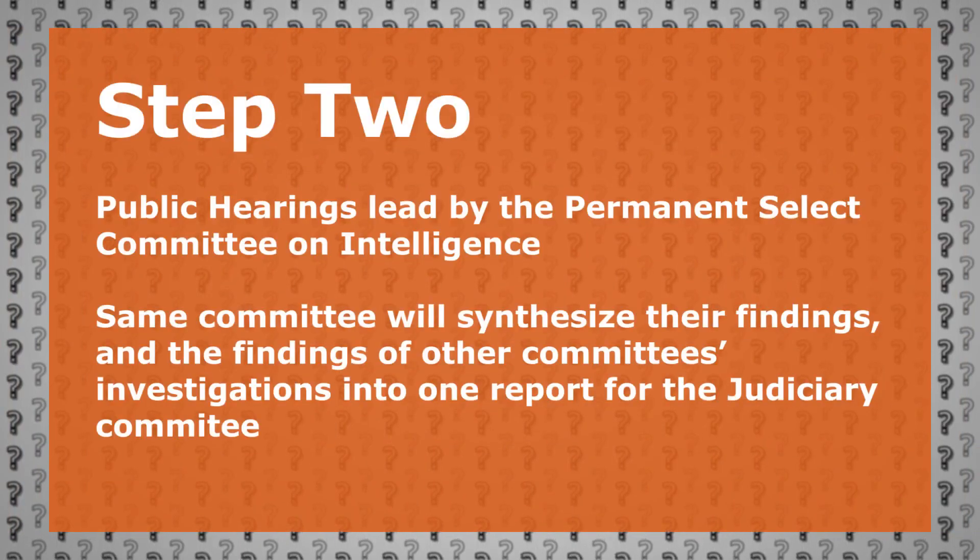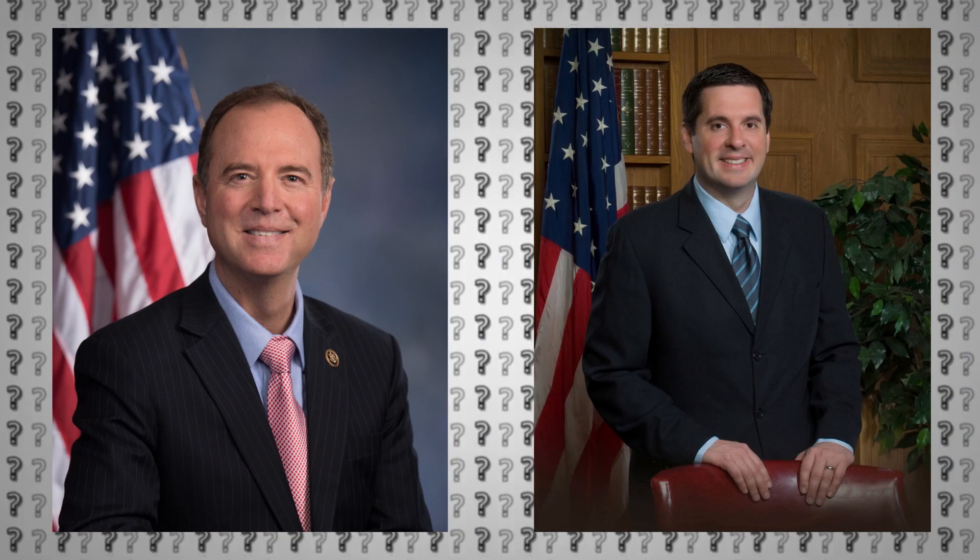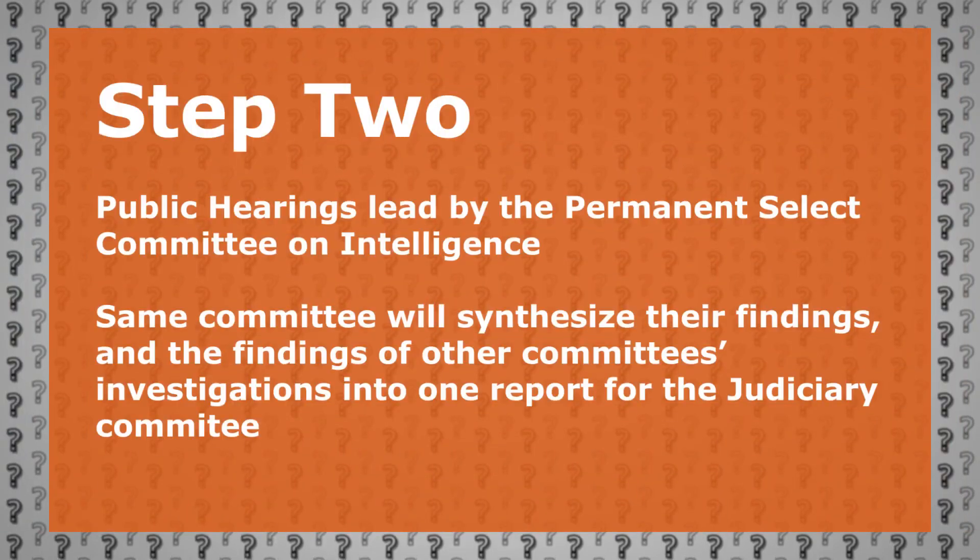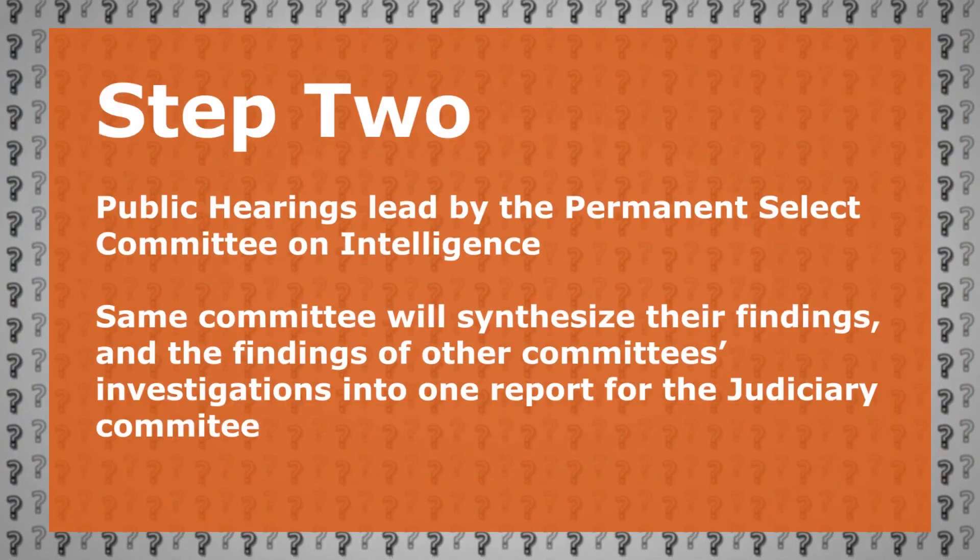Step 2: the Permanent Select Committee on Intelligence takes control of the process, with its chair — currently Democrat Adam Schiff — leading public hearings. Witnesses may be questioned for up to 90 minutes, with that time divided evenly between the committee chair Adam Schiff and the ranking minority member, Republican Devin Nunez. The ranking minority member can also introduce witnesses or documentary evidence. The Intelligence Committee also has the right to release transcripts of depositions taken in private. Then, in consultation with the Chair of the Committee on Foreign Affairs, Elliot Engel, and the Chair of the Committee on Oversight and Reform, now Carolyn Maloney — who took over from Elijah Cummings, RIP — the Chair of the Intelligence Committee, Adam Schiff, will prepare a report for the Judiciary Committee detailing the committee's findings and recommendations, which would be publicly available.